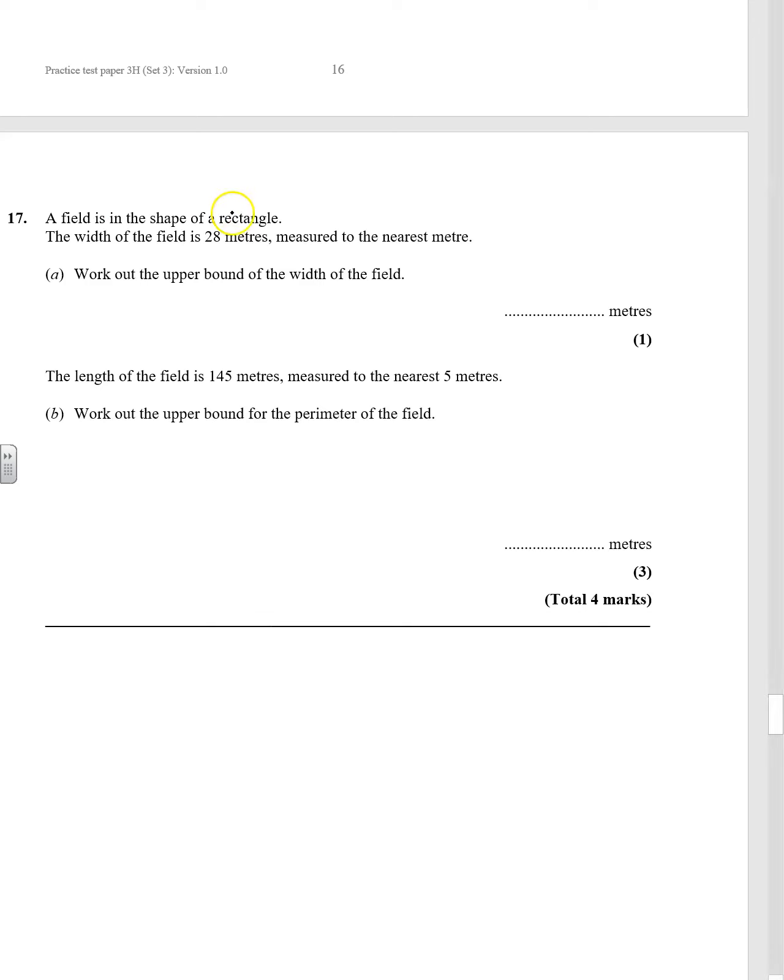Question 17. A field is in the shape of a rectangle. The width of the field is 28 metres measured to the nearest metre. Work out the upper bound of the width.